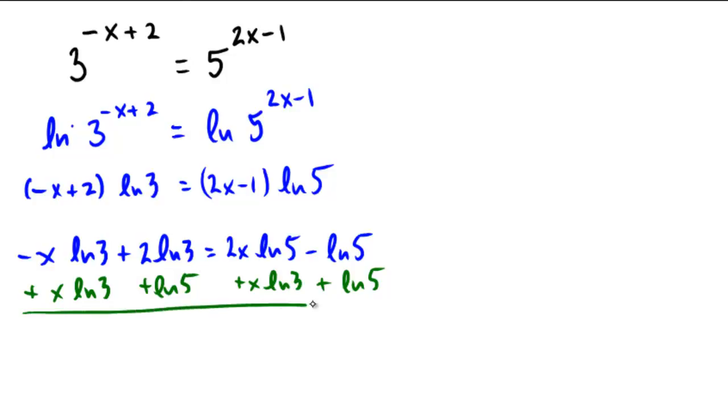So what remains after doing that? Well, on the left, it looks like a 2 ln 3 plus ln 5. And on the right, it looks like a 2x ln 5 plus an x ln 3.